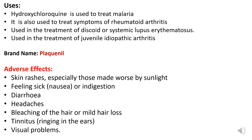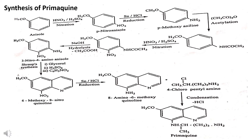The synthesis of primaquine starts from anisole. With nitration it is converted into para-nitroanisole; after reduction it becomes para-methoxyaniline; then acetylation takes place, followed by nitration, hydrolysis, Skraup synthesis, reduction, and finally 8-amino-6-methoxyquinoline and 4-chloropentylamine fuse together to form primaquine.